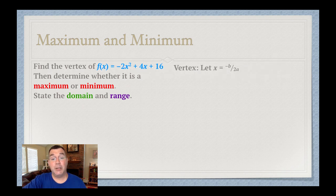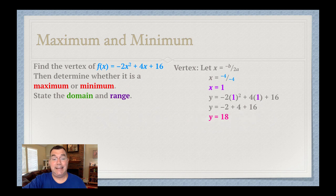So again, I let x equal negative b over 2a, and I plug in my a and b from my function. I get negative 4 over 4, which simplifies to 1. To find the y-coordinate, I plug that back into the function, and I get a y value of 18. So that means my vertex is at 1 and 18.